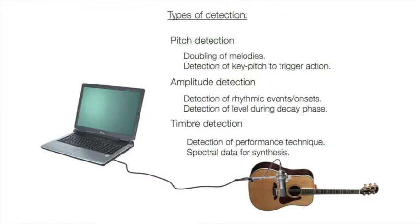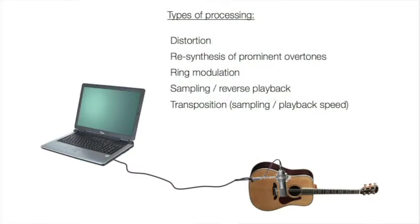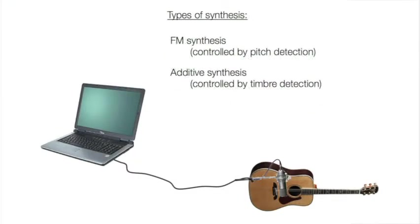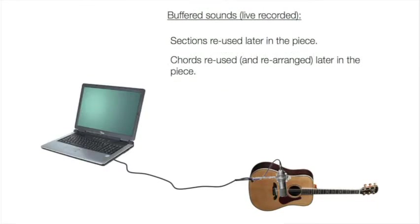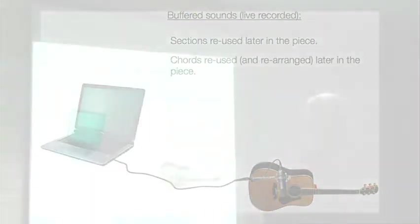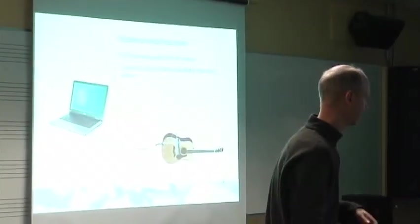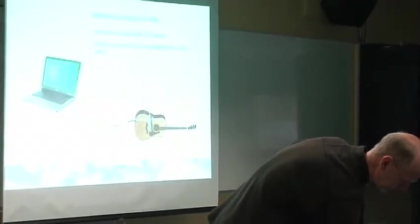Types of detection, the more advanced thing: I detect different performance techniques on the guitar. When he's playing with very sharp attacks, for example, the computer will figure it out and react in a certain way. There's some synthesis going on when I double melodies. This might be interesting: I record, for example, the first one minute of the piece stored in the computer, and then I reuse it later in another section to create variations on top of it. So the guitarist plays with himself, he creates his own complement from the beginning of the piece to perform on top of.